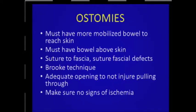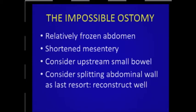When you make the ostomy opening in an obese patient, you probably have to make it a little bigger than you need to get the bowel through without injuring it. Take the time to close the fascia down — that's the best time to do it, because you don't want to come back and fix a paracolostomy hernia in a year. Use the Brooke technique for making the ostomy on the outside, and make sure there are no signs of ischemia before you leave the OR. If it looks a little purple in the OR, it's going to look black the next day.